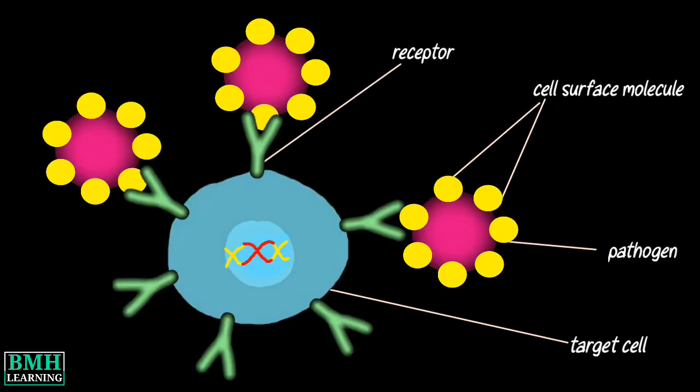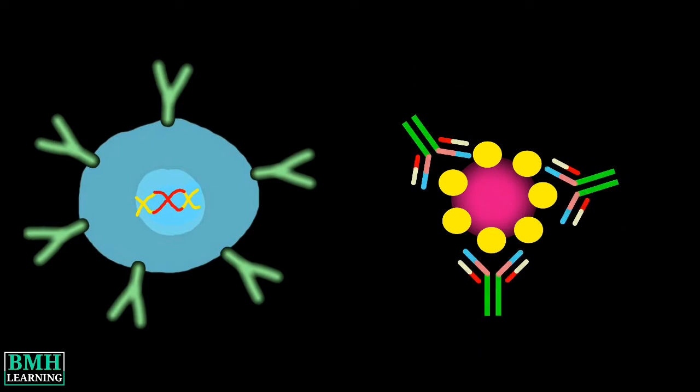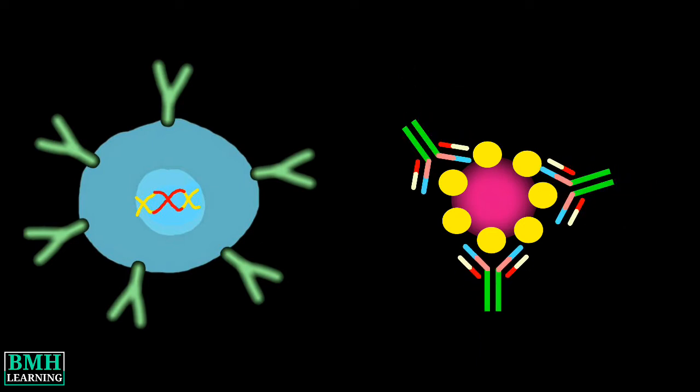Mechanism: In order to enter cells, pathogens such as circulating virus particles or extracellular bacteria use molecules on their surfaces to interact with the cell surface receptors of the target cell, which allows them to enter the cell and start their replication cycle. Neutralizing antibodies can inhibit the infectivity by binding to the pathogen and thus block the molecules needed for cell entry.